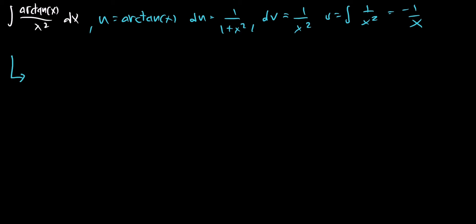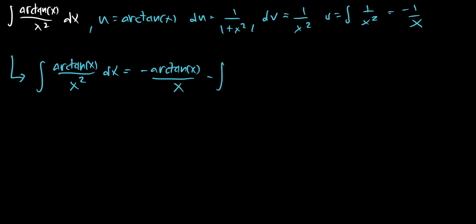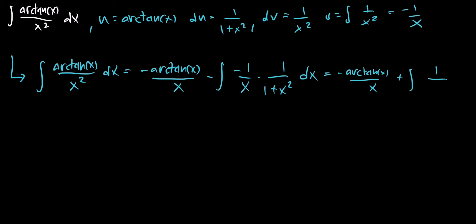Now we can incorporate that using the integration by parts formula. We have the integral of arctangent of x over x squared dx equals u times v, which is going to be negative arctangent of x over x, minus the integral of v du, which is negative 1 over x times 1 over 1 plus x squared dx. This equals negative arctangent of x over x plus the integral of 1 over x times 1 plus x squared dx.